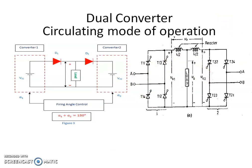Converter 1 acts as a rectifier and converter 2 acts as an inverter, or if converter 2 acts as a rectifier, then converter 1 acts as an inverter, according to this relationship. There is a circulating current present in the circulating mode of operation. This circulating current circulates in the inverter circuit. We can reduce the effect of the circulating current with the help of the reactor. Thank you.